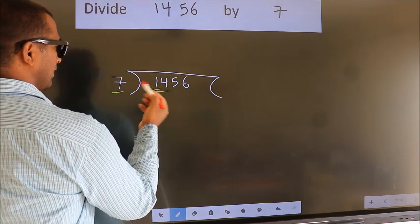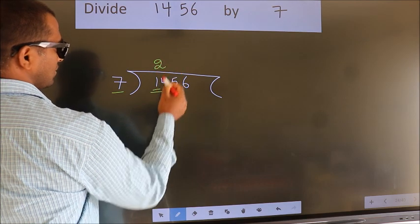So we should take 2 numbers, 14. When do we get 14? In the 7 table. 7 times 2 is 14.